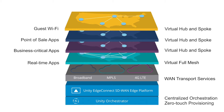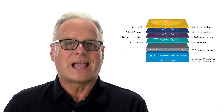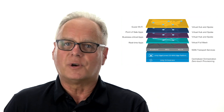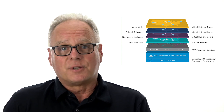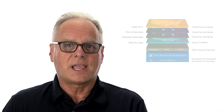With zero-touch provisioning, configurations and policies are programmed once and pushed to tens or hundreds or even thousands of branch locations without having to manually program each device. This eliminates the truck roll, or the need to send specialized IT resources out to branch locations whenever a new app is added or a policy is changed. This also reduces human errors, which results in more consistent policies across the enterprise.